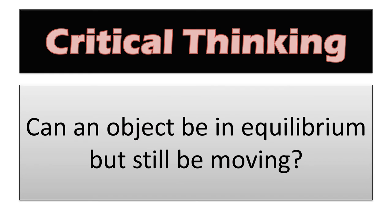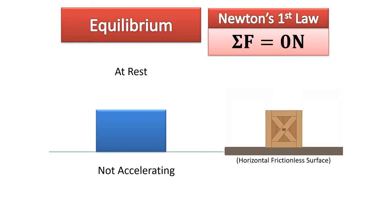Critical thinking: can an object be in equilibrium but still be moving? Can you think of an example? Pause the video and think of something that is moving but in equilibrium. Here's one example: a box is in equilibrium, at rest, not accelerating — Newton's first law is at play. But if you come along and push on the box, that's the only horizontal force on a frictionless surface, so it's unbalanced and it starts accelerating.